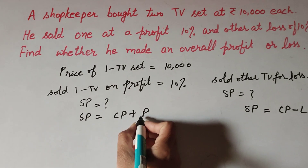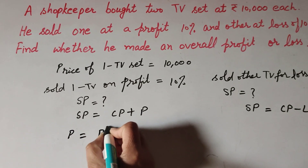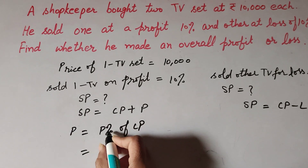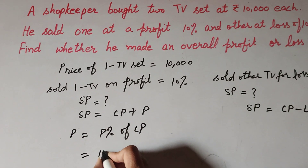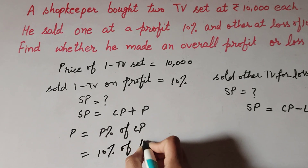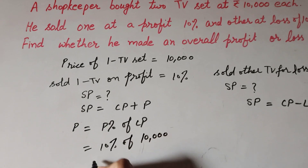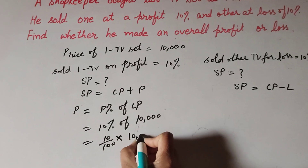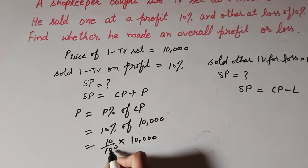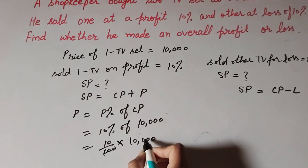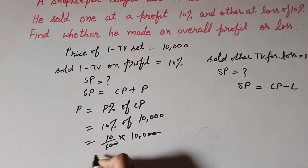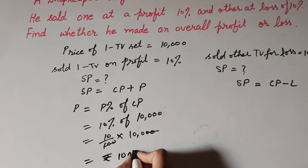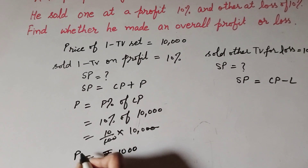We need the profit amount, but we are given the profit percentage. So first we find profit: profit equals profit percentage of CP. Profit percentage is 10 percent of CP. CP is 10,000, so profit equals 10 over 100 multiplied by 10,000, which equals rupees 1,000. So he gets a profit of rupees 1,000.